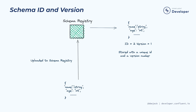Once Schema Registry receives the schema, it assigns it a unique ID number and a version. Unsurprisingly, the first time you register a schema for a given subject name, it's assigned a version of 1. After this happens, we're done — the schema has been registered.